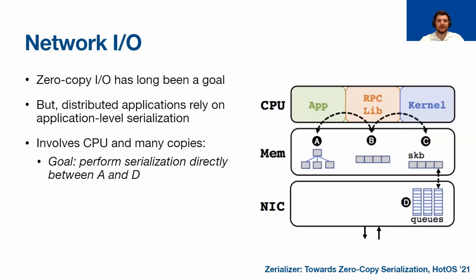Let's begin with some network I/O background. Zero copy network I/O has long been a goal in the networking community. At the same time, we've seen a huge rise in the prominence of distributed applications, which heavily rely on application level serialization. Unfortunately, this kind of serialization completely obviates all the engineering that has gone into zero copy network I/O. You can see the path that a serialized RPC message takes on its way out of a host: being encoded from the native data in main memory through the application and the RPC library to the encoded format in memory, finally being loaded into the kernel socket buffers, and then being sent out through the NIC queues. This is a relatively arduous process that involves many copies.